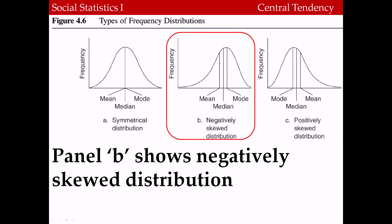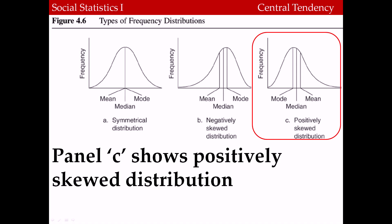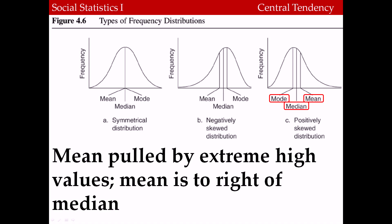Panel B shows a negatively skewed distribution, meaning there is some very small value pulling the distribution towards the left tail. The mean is pulled in the direction of the extremely low value, so the mean is to the left of the median, and the mode is to the right of the median where the peak of the data is found. Panel C shows a positively skewed distribution, where an extremely high value pulls the mean to the right of the median, and the mode is to the left. Although most of the distribution is in the left tail, we call this a positive skew because an extreme positive value is pulling the distribution towards the right tail.